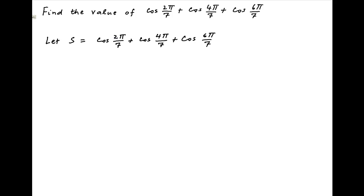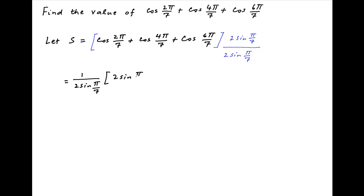This can be written as 1/(2·sin(π/7)) multiplied by, in brackets: 2sin(π/7)·cos(2π/7) plus 2sin(π/7)·cos(4π/7) plus 2sin(π/7)·cos(6π/7).